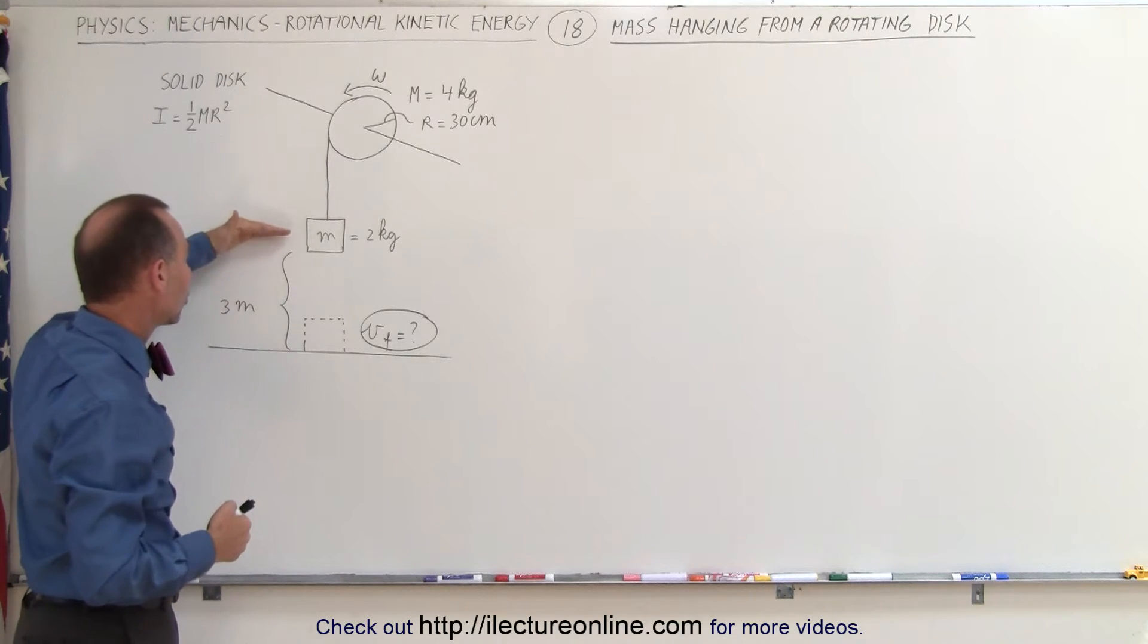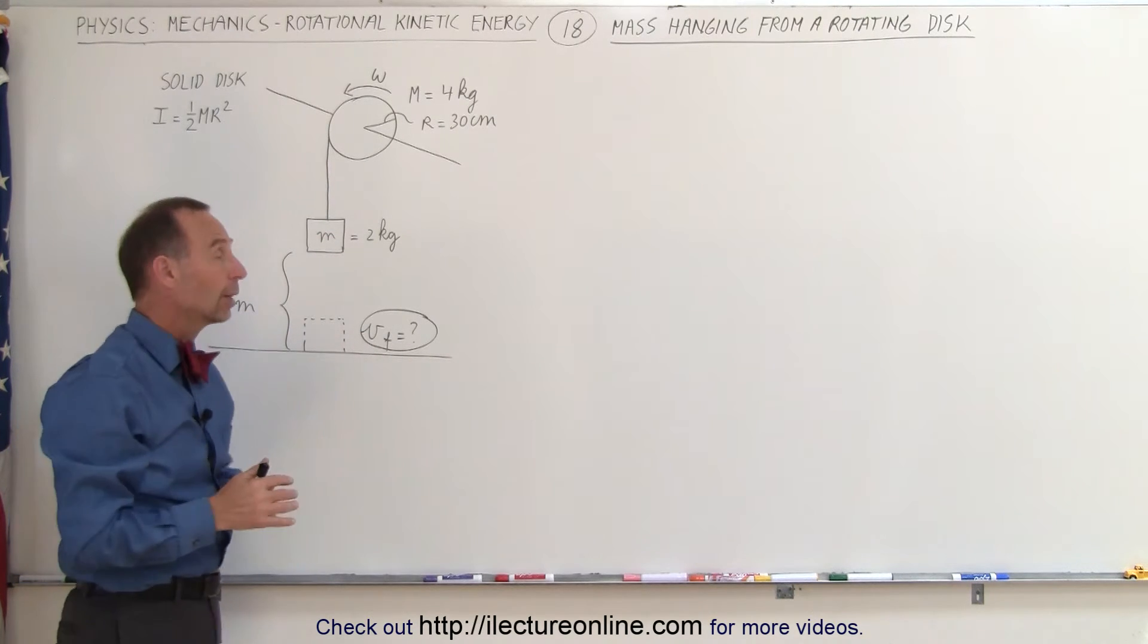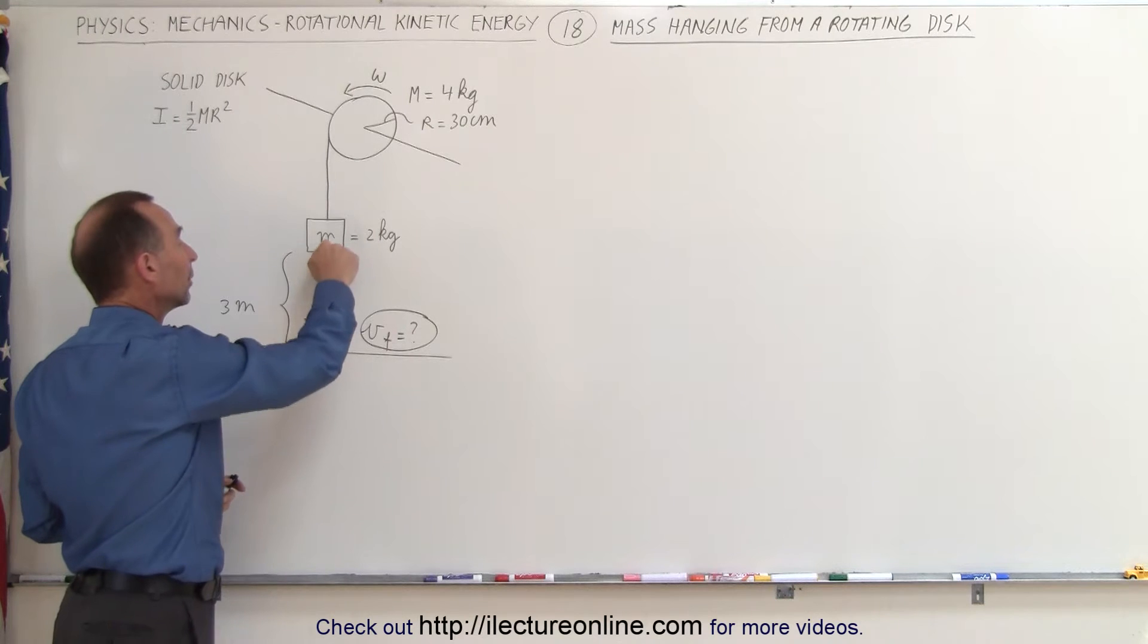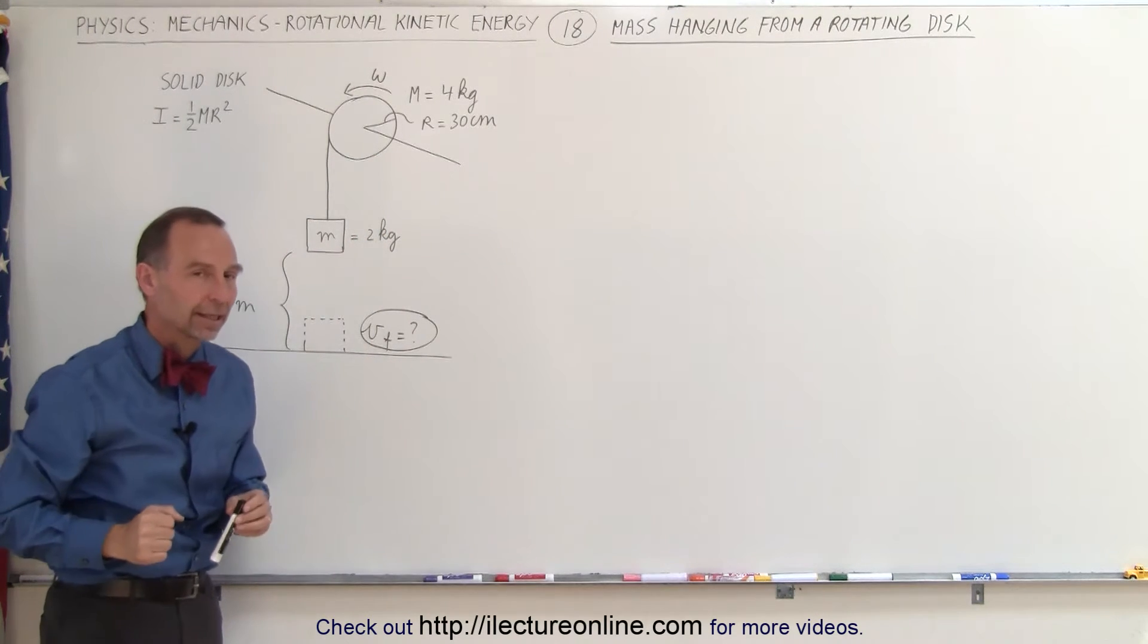The question is, if the object started from a height of three meters, what will be its final velocity when it reaches the bottom? Of course, it will lose potential energy, gain kinetic energy, and the disk will gain rotational kinetic energy.